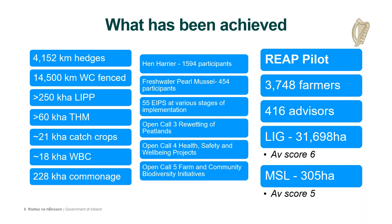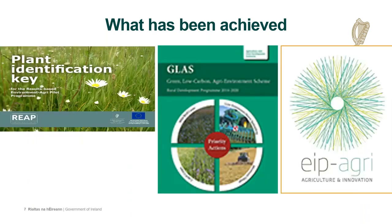The REAP pilot was very important in terms of training up farm advisors. There have been over 400 farm advisors trained in how to do results-based scoring on farmland. This is a very significant and important resource in terms of delivering the new ACRES scheme. These resources include the REAP plant identification key, which is available to farm planners to help with that results-based scoring, alongside the GLAS scheme and EIP Agriculture tools.